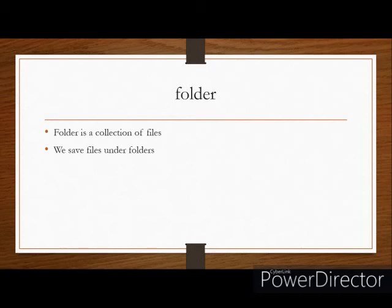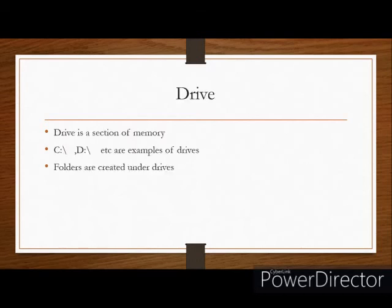All the folders or directories are present under drives. What is a drive? A drive is a section of memory in our computer. You can see C:\ and D:\ — all these are examples of drives. Usually a computer has at least two drives. For example, C:\ is a drive and D:\ is a drive. When you open My Computer, you can see the drives available in your computer.